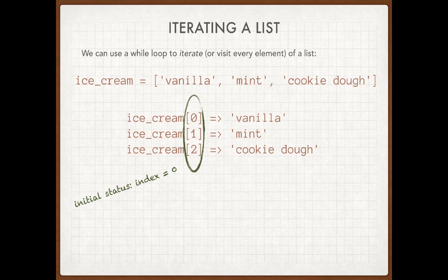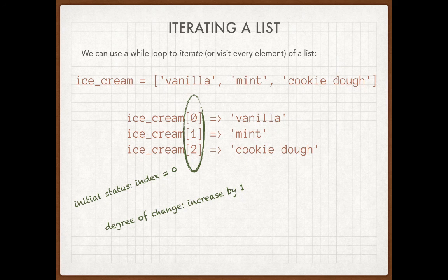Before I even get into my loop, the environmental condition is that I need to be looking at drawer zero. We also know that in a list, we increase the drawer numbers by one all the time — Python does this automatically. So my degree of change is going to be: increase the value of the index by one every time I go through the loop. That seems pretty obvious.